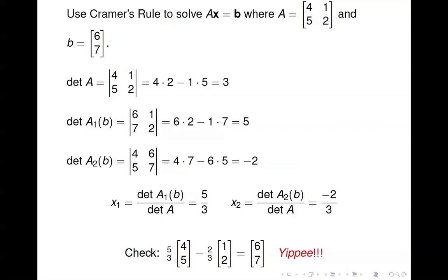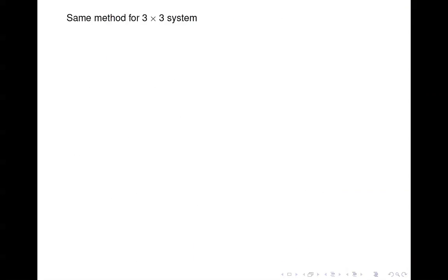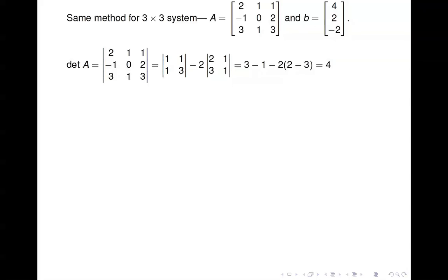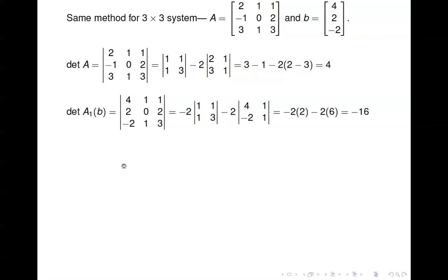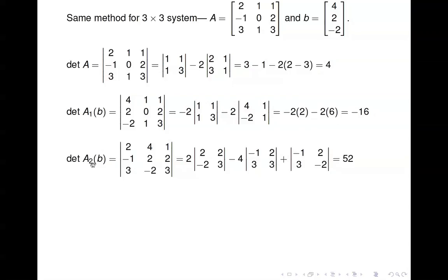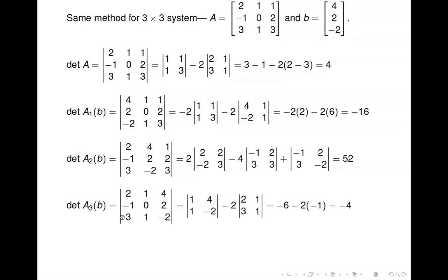We can use the same method for a 3 by 3 system, although this time you have to compute a determinant for each of three variables plus the determinant of A. Here's a matrix A and the right-hand side b. Compute the determinant of A first, then compute the determinant of A_1(b) — stick b in the first column — then A_2(b) and A_3(b). Putting it all together: x_1 = −16/4, x_2 = 52/4, and x_3 = −4/4.